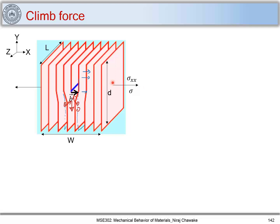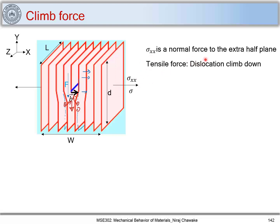Similarly, when we have a compressive stress, the planes get squeezed in and atoms from the extra half plane join the surrounding planes, causing a climb up of the dislocation. So the nature of the normal stress to the extra half plane determines whether an edge dislocation will climb up or climb down. Sigma_xx is a normal stress to the extra half plane and is tensile in nature, so this stress will cause a force on the edge dislocation to climb down. Tensile normal stress leads to dislocation climb down, whereas compressive normal stress leads to dislocation climb up.